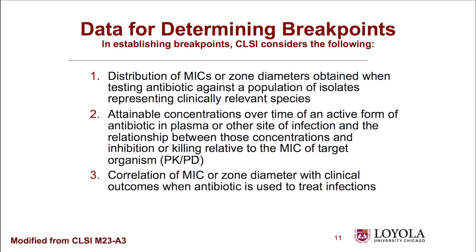How do these breakpoints get determined? Both CLSI and EUCAST look at the distribution of MICs obtained when testing a wild-type population. You collect E. coli from various sources, test them, and see what MICs they have — many will be susceptible, some resistant. That's called the wild-type distribution or the epidemiologic breakpoint. You also look at attainable drug concentrations over time in plasma or at the site of infection.